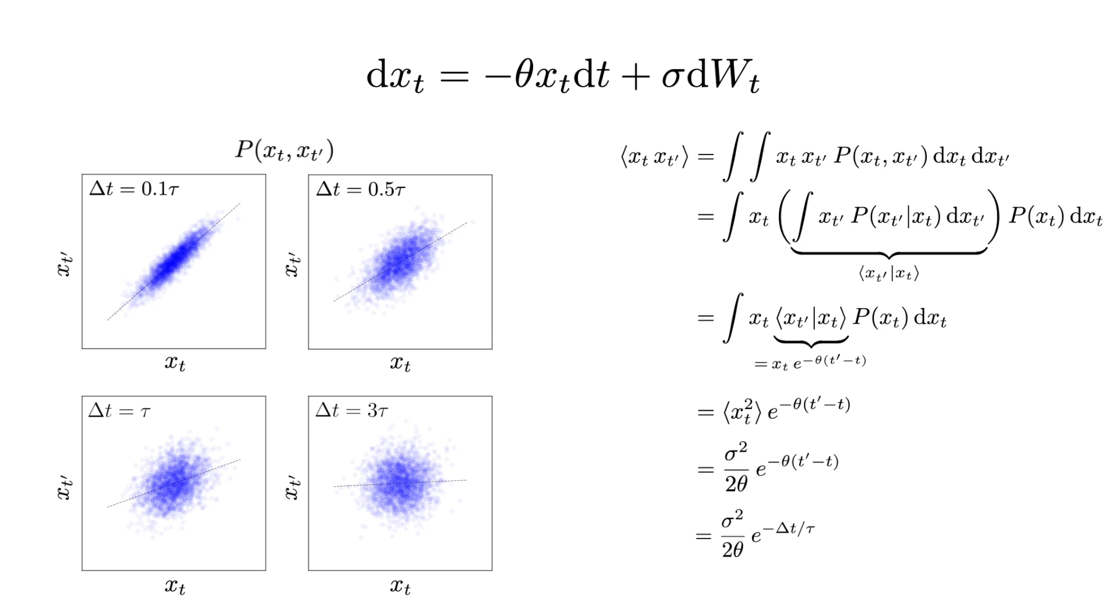Additionally, note that the autocorrelation function remains positive for all delay times, which in our case means that the x value at a later time t prime is more likely to have the same sign as the x value at the earlier time t.